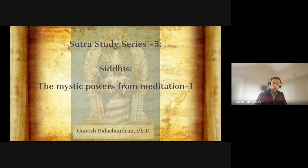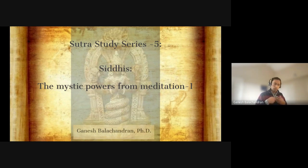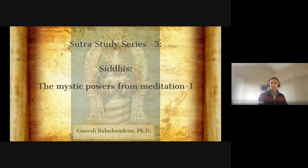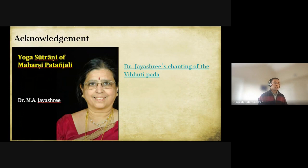The first portion of the second chapter covers the foundation for what Patanjali calls Ashtanga Yoga, the eight limbs of yoga, which we saw in the second presentation. The next portion of the second chapter is devoted to the eight limbs themselves, covered in the third and fourth presentations. The third chapter begins with the last few limbs of Ashtanga Yoga on meditation, then goes into the benefits of meditation and the siddhis — the mystic superpowers from meditation. The final chapter, the Kaivalyapada, deals with ultimate liberation. I'd like to acknowledge Dr. Jayashree's pristine chanting, which I have liberally sprinkled throughout the presentation.